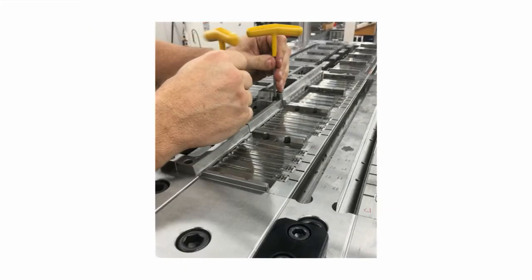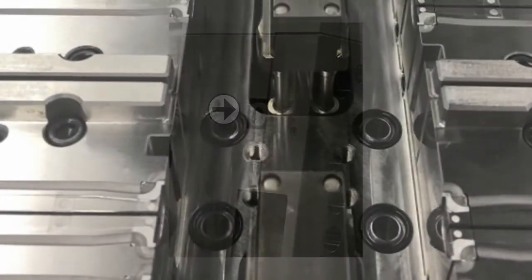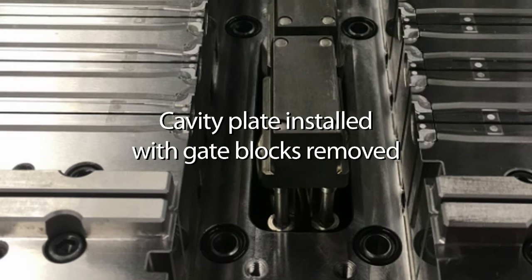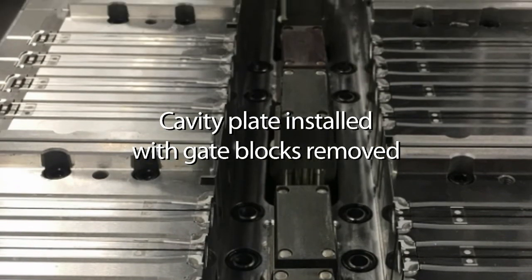On a new tool, installation of the cavity plate should be done according to the standard side gate installation method. This includes rotation of the cam jacks to remove preload from the nozzle housings. It is recommended that the mold be designed such that the cavity plate is installed with cavity blocks removed.